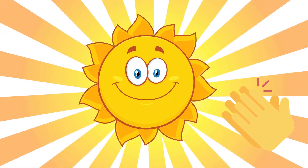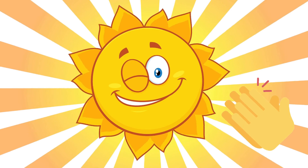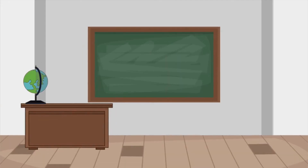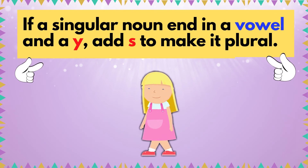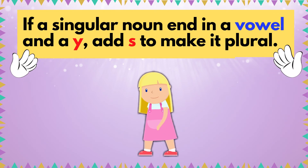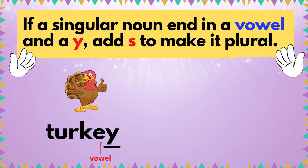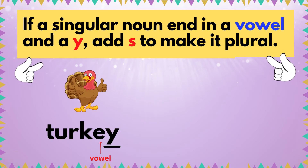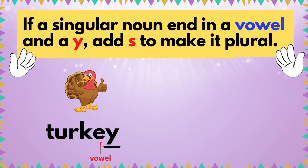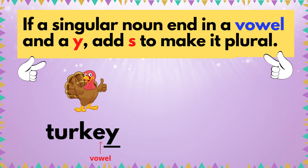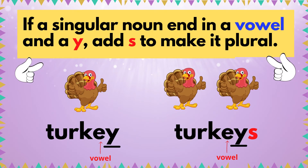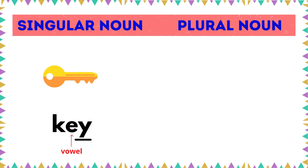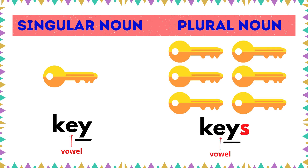You've reached this far, so I am sure that you are liking our lessons. Rule number five: if a singular noun ends in a vowel and a Y, add S to make it plural. It has a vowel which is the letter E followed by letter Y, so turkey becomes turkeys. Look how we added S at the end of the word. How about this? Key becomes keys.